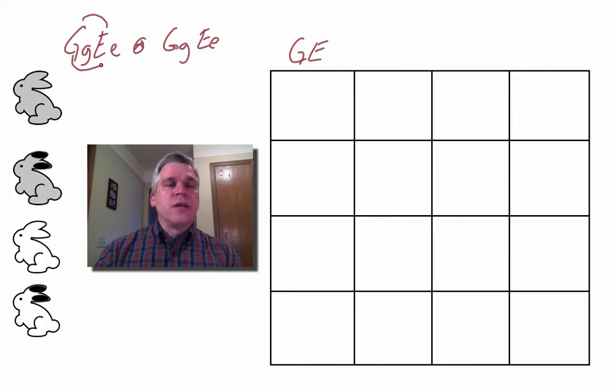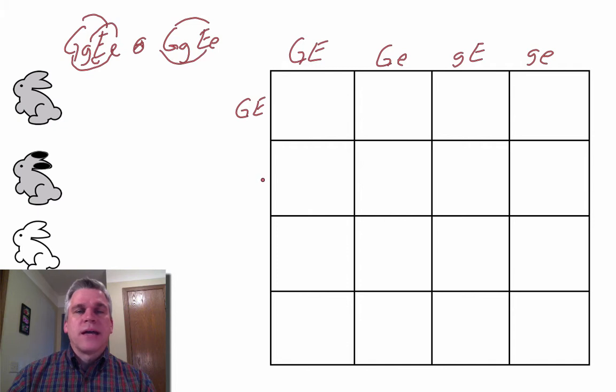In the third one, we're going to put the inside G and the inside E. Now notice, even though E is dominant, I'm keeping the E second, the G's first. And then the last G and the last E. The same thing is happening with the other parent. First G, first E, outside G, outside E, inside G, inside E, and then the last G and the last E.